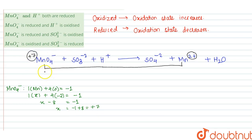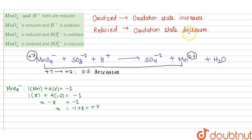So here, the oxidation state of Mn changes from +7 to +2. That means the oxidation state is decreasing. When the oxidation state decreases, it is reduction. So here, MnO4⁻ is getting reduced.